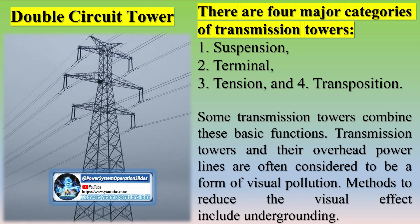Activities normally done on a transmission line include: survey, design and detailing, proto-manufacturing and assembly, testing, manufacturing and supply, construction and erection, and stringing of line and commissioning.